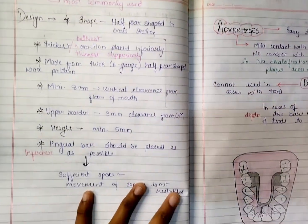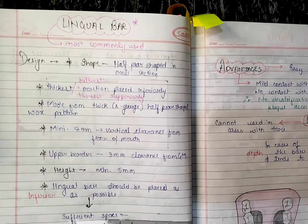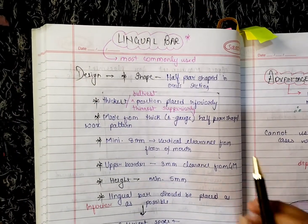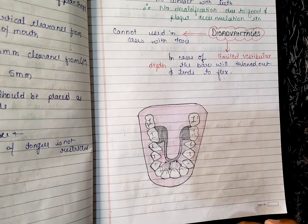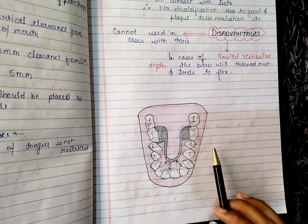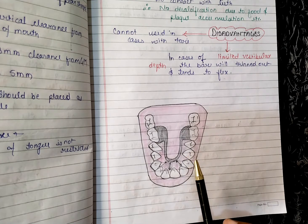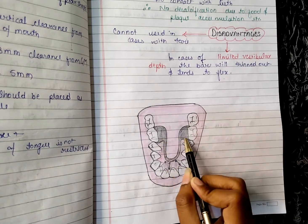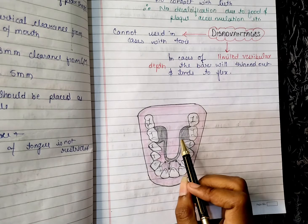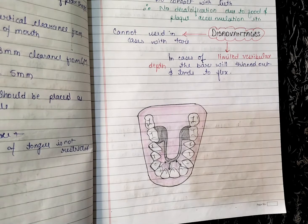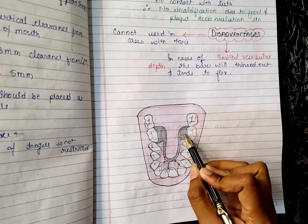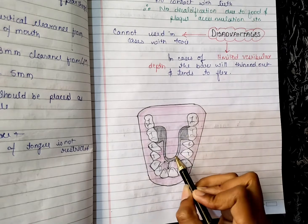Its shape — you can see it from the diagram — it is half-pear shaped in cross section. The thickest and bulkiest portion is placed inferiorly, and it is thinnest superiorly. So to remember: bulkiest and thickest portion inferiorly, and thinnest superiorly.